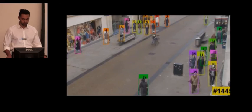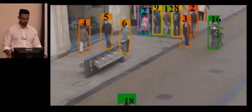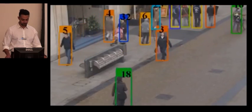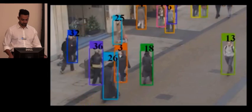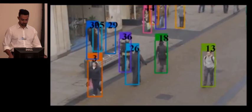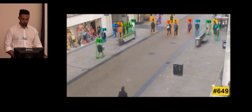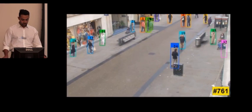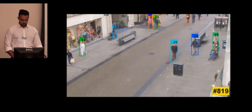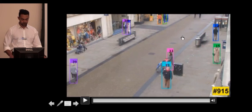This is the Town Center sequence, showing parts with heavy inter-occlusion between objects, and more qualitative results on this very long sequence of 4,500 frames.